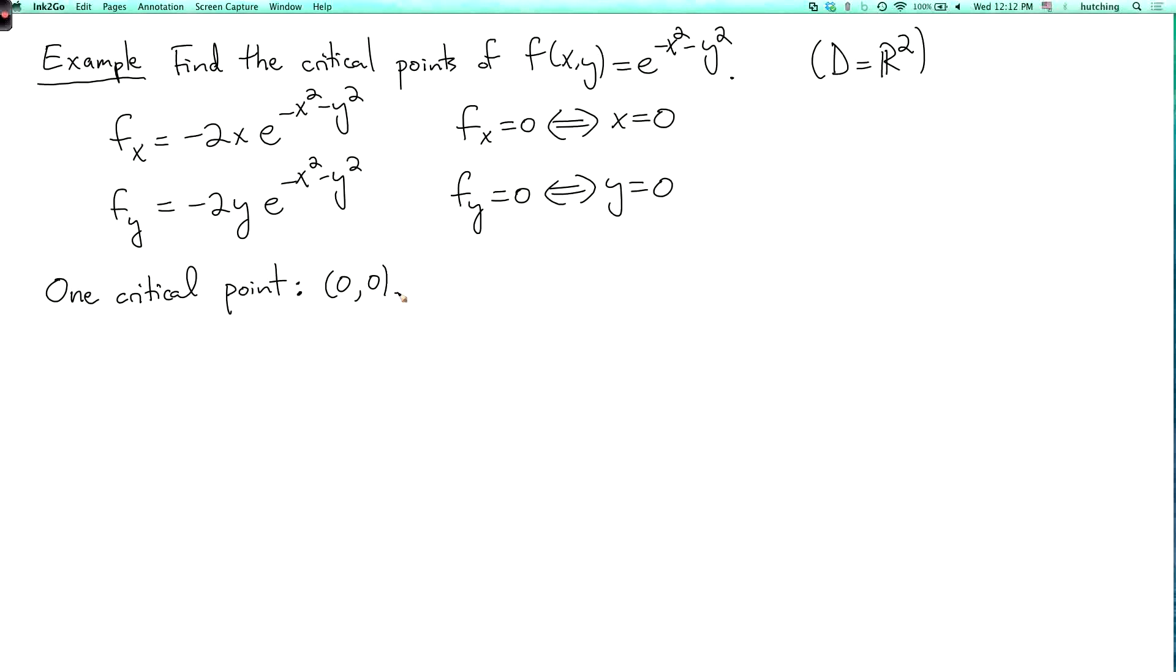Now, is this a local minimum, a local maximum, or neither? Well, if we look at the function, it's e to the minus the distance squared from the origin. At the origin, f is equal to one. And at any point other than the origin, f is e to something negative, which is less than one. So this is a global max.